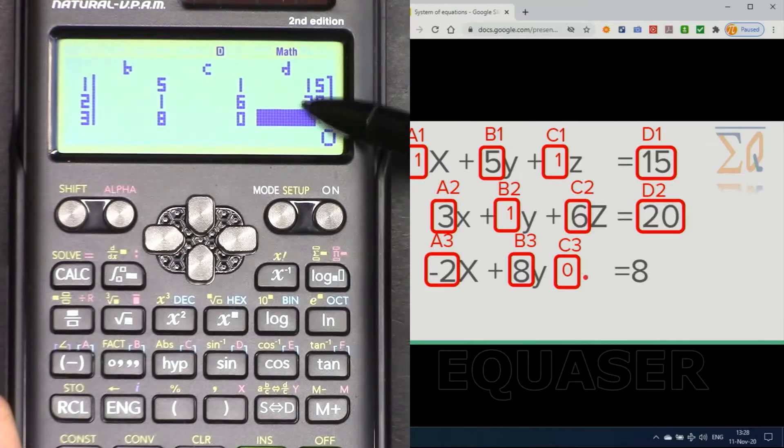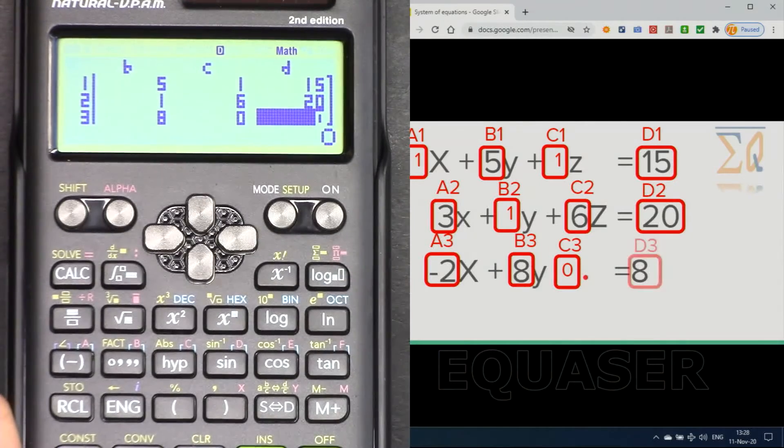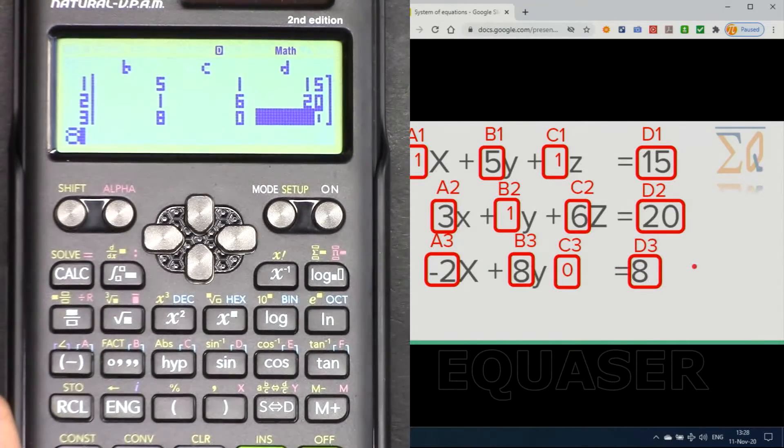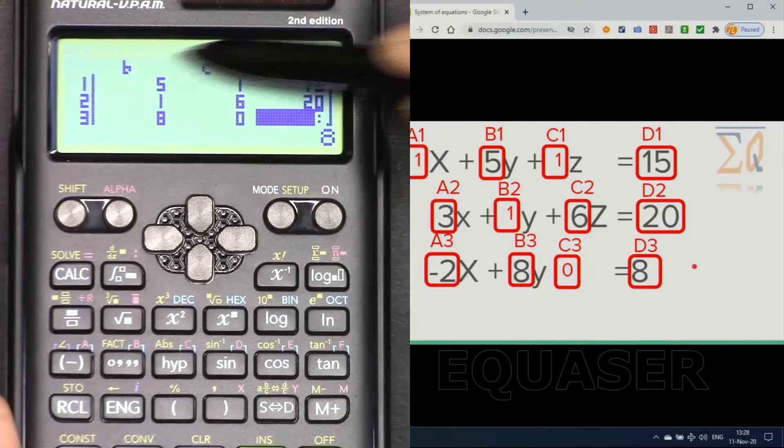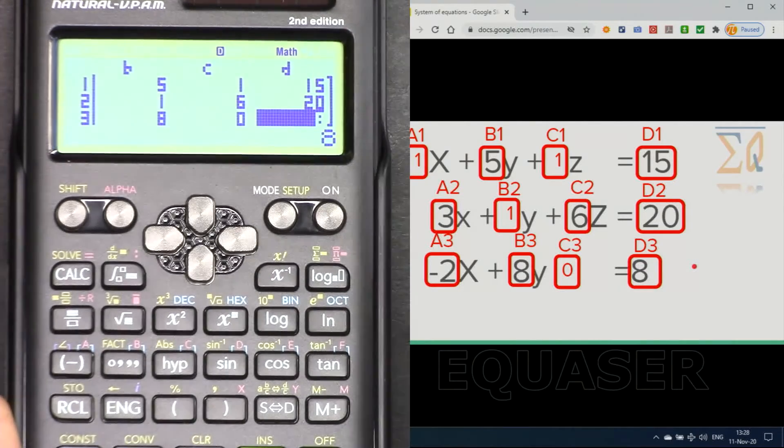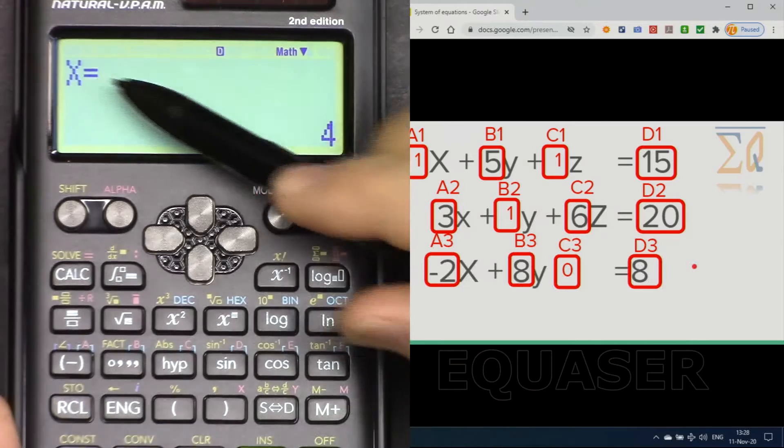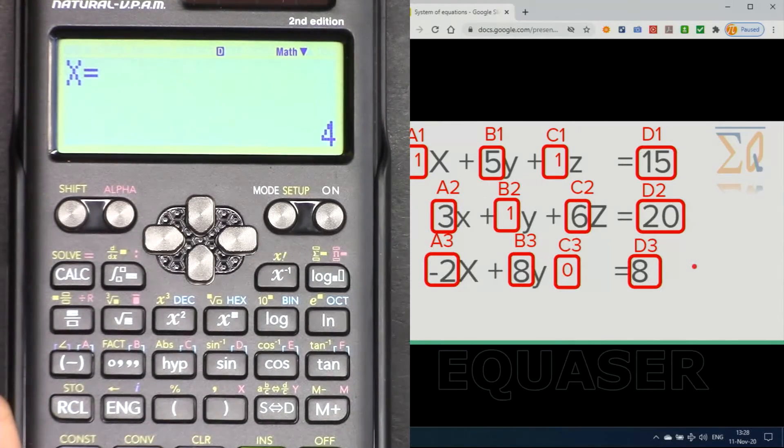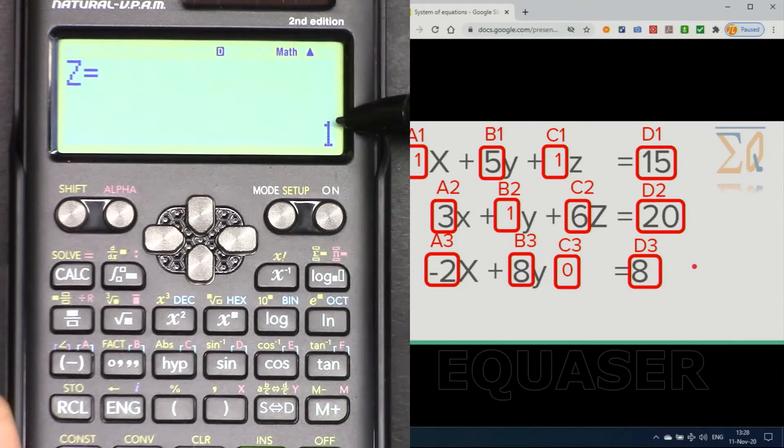Now all the coefficients have been entered. Just press equal: x is equal 4. Press it again, y is equal 2. And press it again, z is equal 1.